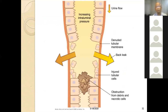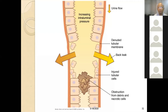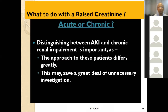If urinary flow is reduced, there is increased intraluminal pressure, a denuded tubular membrane, back-leak, and injured tubular cells. There is obstruction from debris and sloughed cells, leading to acute tubular necrosis. All these mechanisms together explain the pathology of intrinsic AKI.